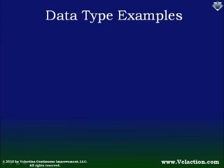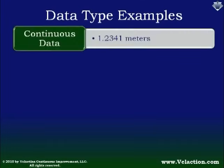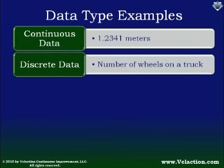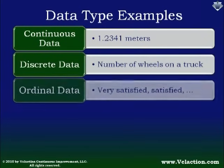Let's take a look at some examples of this data. Continuous: if you say how long is something or how tall is somebody, 1.2341 meters is a piece of continuous or variable data. If you ask a number of wheels on a truck, that is a discrete piece of data.